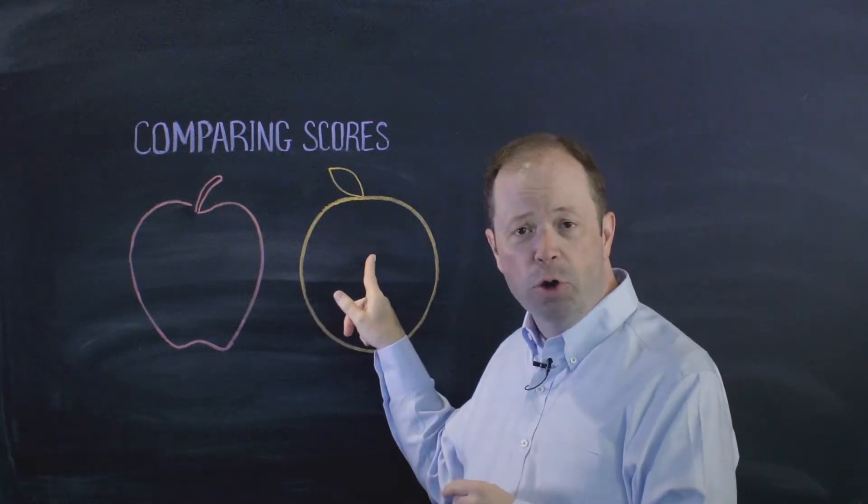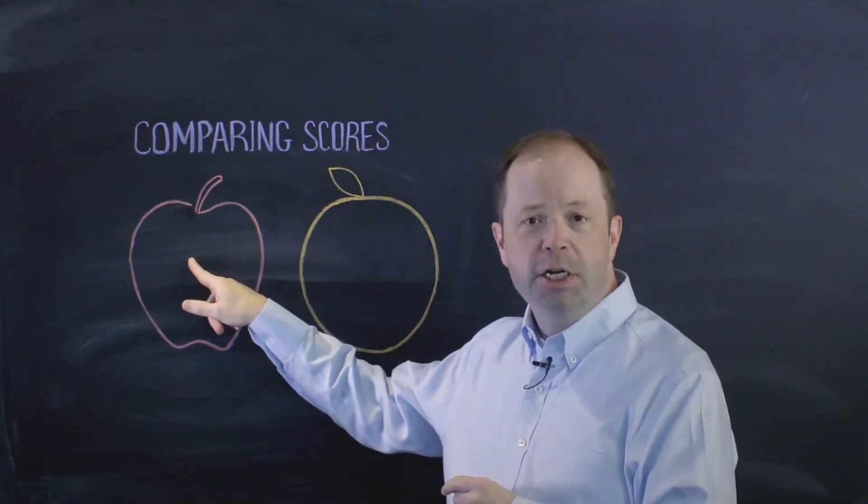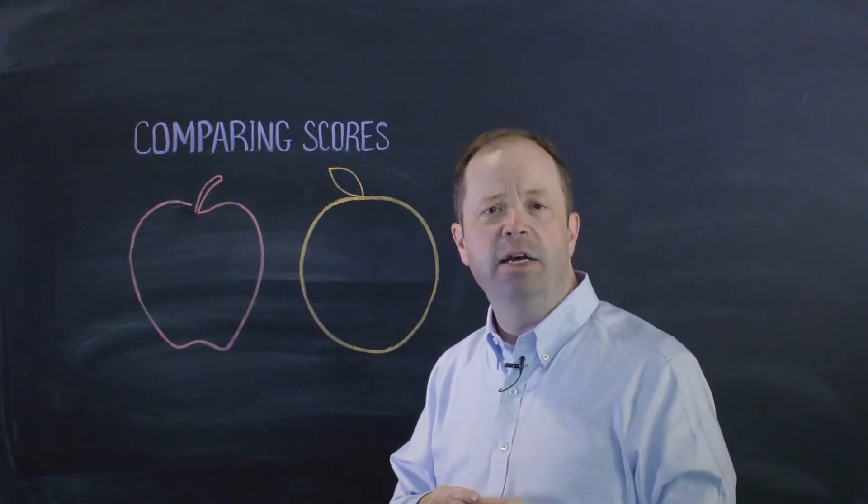So when we compare the norm reference score to the criterion reference score, maybe right in the center they don't line up just as well.